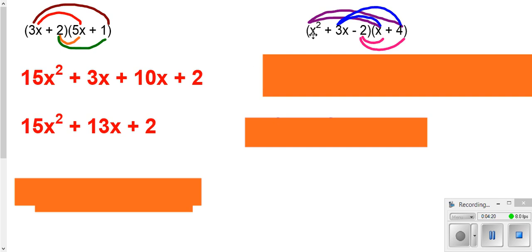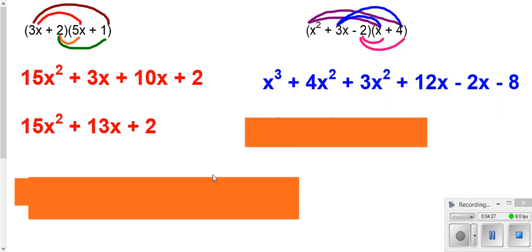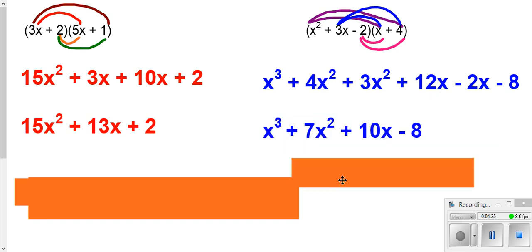Here, we've got to take the 2x times each one of these, the 3x times each one of these, and the negative 2 times each one of these. And then we can look for like terms. And we have our squareds here, 4 of them, and 3 of them gives us a total of 7 of them. Normal x's, 12 of them, minus 2 of them, gives us 10 of them.